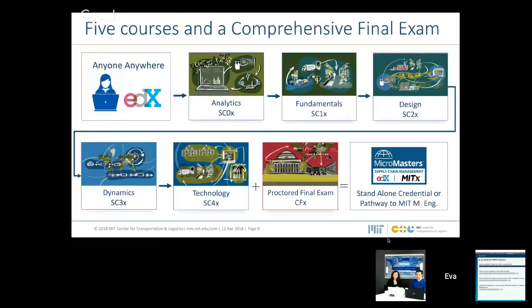The MicroMasters includes five massive open online courses. Anyone from anywhere with internet connectivity can enroll. The program includes Supply Chain Analytics, Supply Chain Fundamentals, Supply Chain Design, Supply Chain Dynamics, and Supply Chain Technology — five courses covering the fundamental concepts behind supply chains. At the very end, for those who completed and passed all five courses, you need to take a final comprehensive proctored exam before earning the MicroMasters credential.